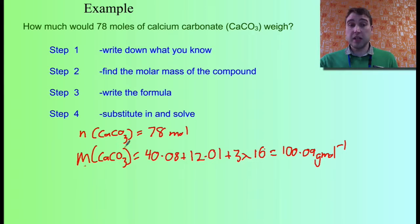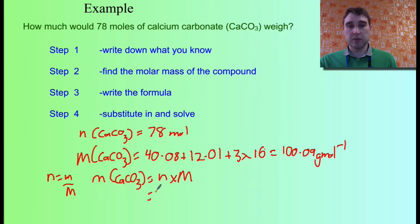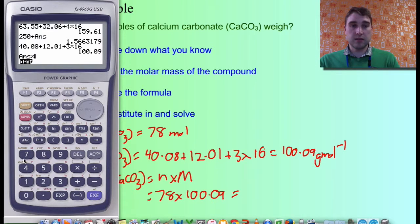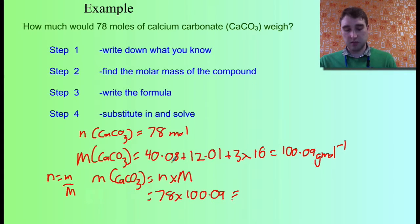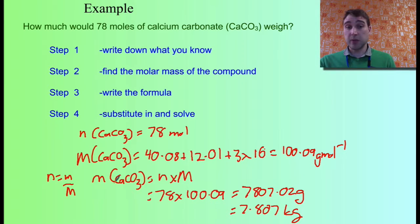Now we write and rearrange the formula — we're looking for the mass. Using the magical triangle or by multiplying both sides by the molar mass, we get: mass equals number of moles times molar mass. Our number of moles is 78, molar mass is 100.09. Putting that in the calculator: 100.09 times 78 equals 7807.02 grams. We can convert that to kilograms by dividing by 1000, giving 7.807 kilograms. That's an example where we had to rearrange the equation.